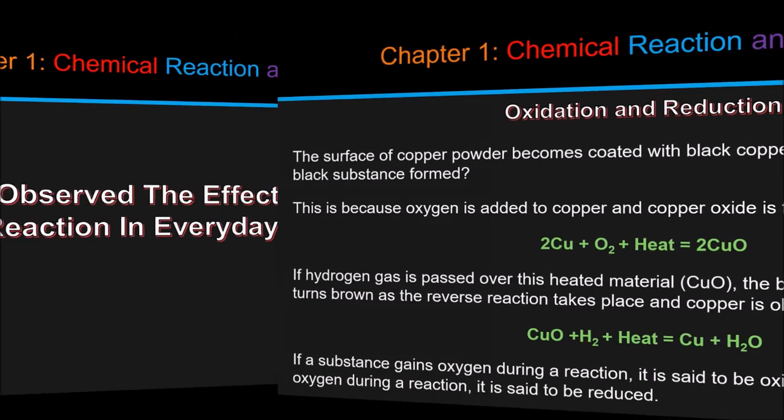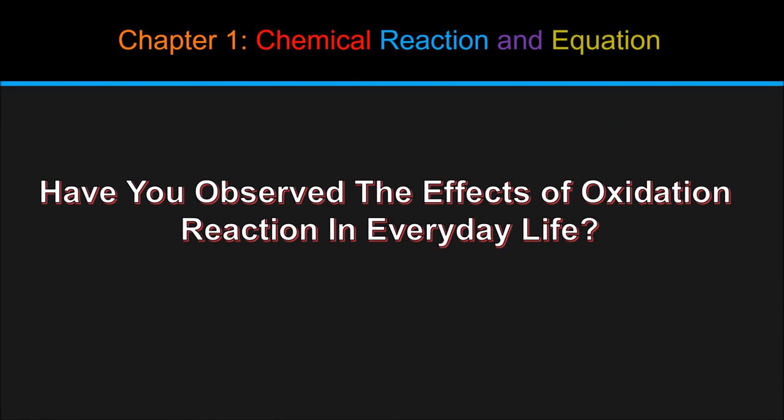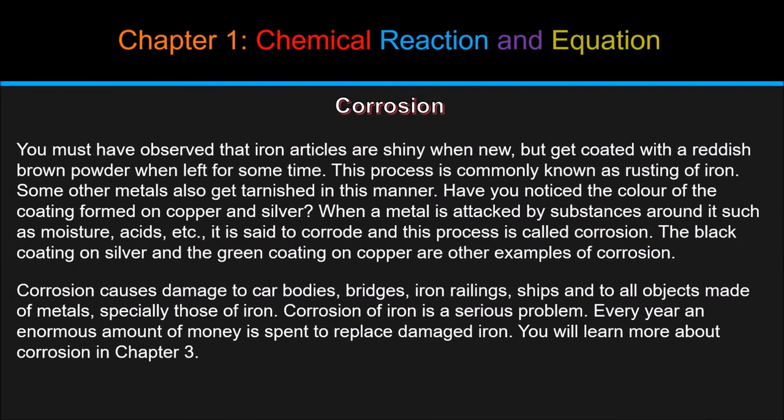Have you observed the effects of oxidation reaction in everyday life? Let us understand what is corrosion. You must have observed that iron articles are shiny when new, but get coated with reddish brown powder when left for some time. This process is commonly known as rusting of iron. Some other metals also get tarnished in this manner. Have you noticed the color of the coating formed on copper and silver? When a metal is attacked by substances around it such as moisture, acids, etc., it is said to corrode and this process is called corrosion. The black coating on silver and the green coating on copper are other examples of corrosion. Corrosion causes damage to car bodies, bridges, iron railings, ships and to all objects made of metals, especially those of iron. Corrosion of iron is a serious problem. Every year an enormous amount of money is spent to replace damaged iron. You will learn more about corrosion in Chapter 3.